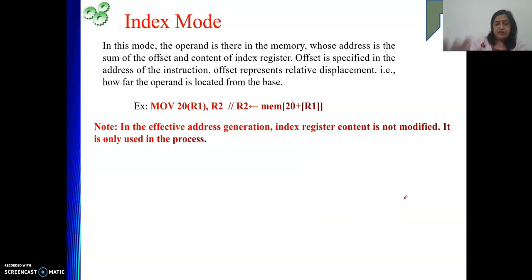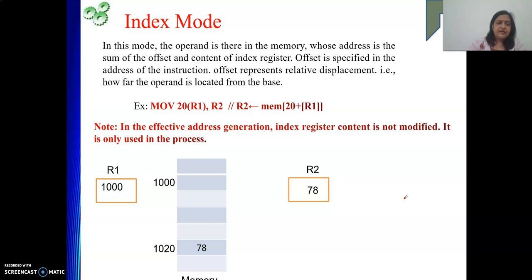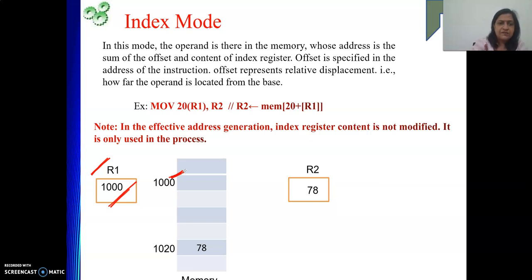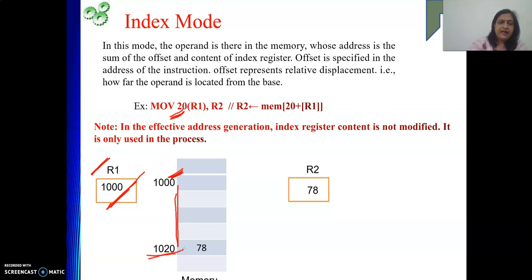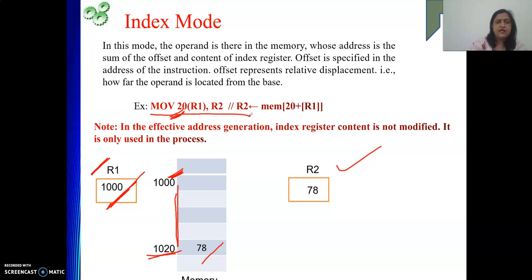Diagrammatically: register R1 is there holding one number representing the base address. In the instruction, offset is given as 20. So from 1000, at location plus 20, our data will be there. The address of our operand will be content of R1 plus 20, which equals 1020. At address 1020 you will get your data, and that data we need to move to register R2. So after execution of this instruction, for this given scenario, the value of R2 will be 78.